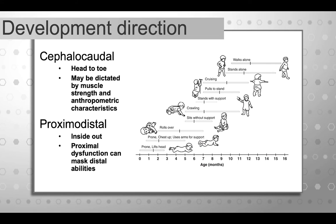Developmental direction is important to understand. Development occurs in a head-to-toe, or cephalocaudal, direction. Baby first develops head control, then trunk control, becoming able to sit up and move in and out of sitting, and then eventually gains hip and lower extremity control that allows for pulling to stand, cruising, and walking. It is quite predictable that children develop in this head-to-toe direction.